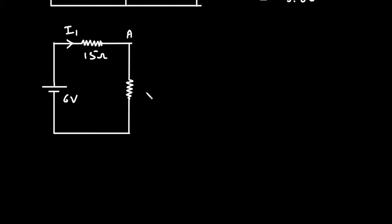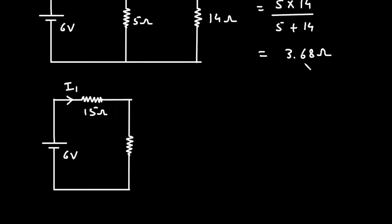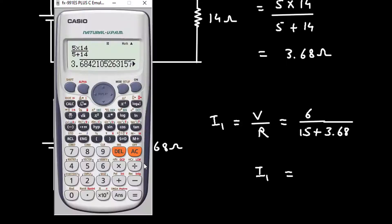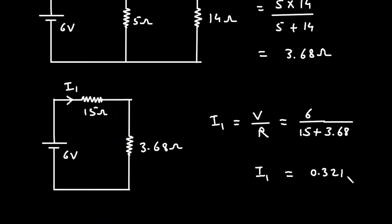We replace the two parallel resistances with a single resistance of 3.68Ω. The value of I1 can now be found easily: it is voltage divided by resistance. The voltage is 6V, and the resistance is 15 + 15 + 3.68Ω. Therefore I1 = 6 divided by 15 + 3.68, which equals 0.321 ampere.